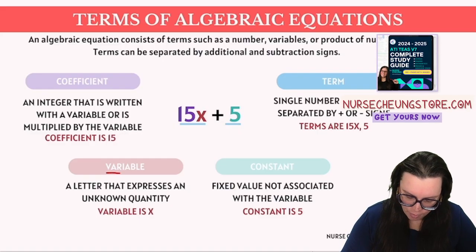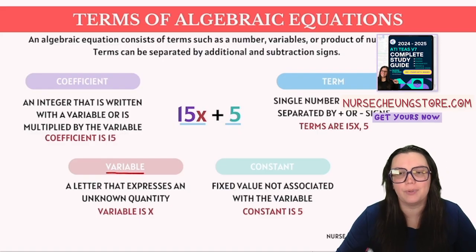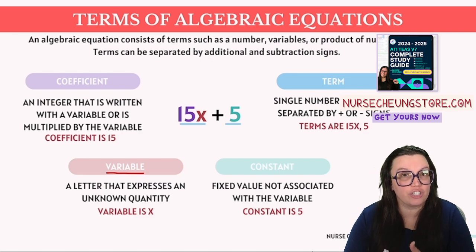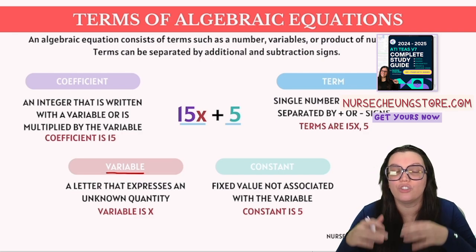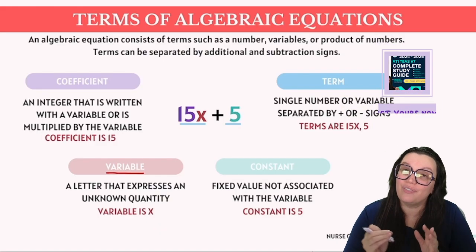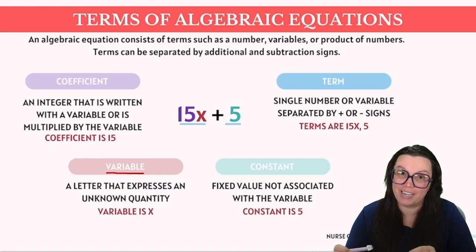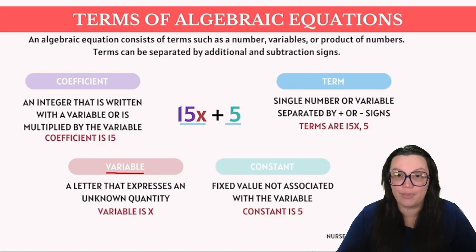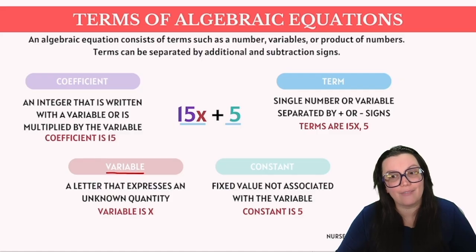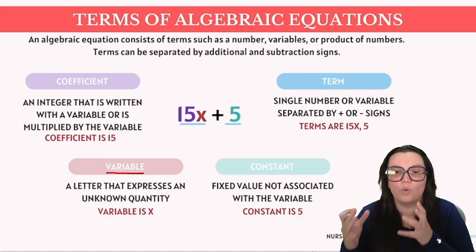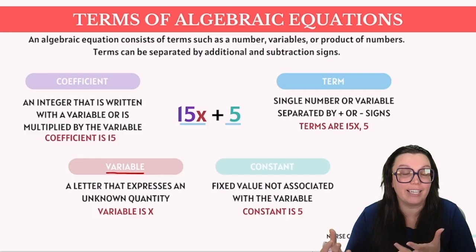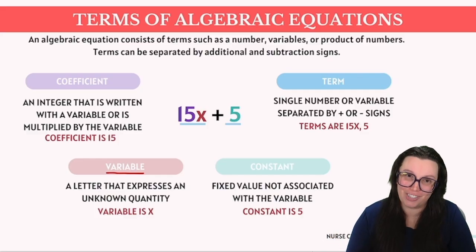Let's begin with the term variable. Variables are elements within an expression whose values are not fixed — they represent letters of unknown quantities. In our given example, the one variable we have, x, represents the quantities that are not immediately known without needing additional information.